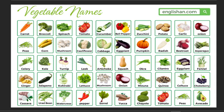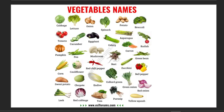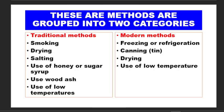So we also look at the vegetables. You can see carrot, tomato, cucumber, pepper, among others. These are many. You will be able to look at various vegetables. Here we have cabbage, we have onion, spinach, broccoli, among others.